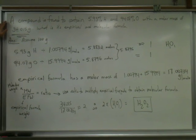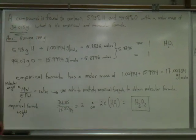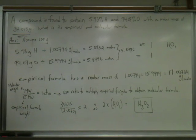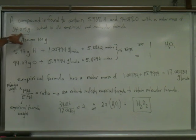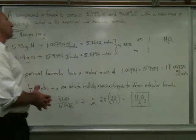A compound is found to contain 5.93% hydrogen and 94.0% oxygen with a molar mass of 34.015 grams. What is its empirical and molecular formula?